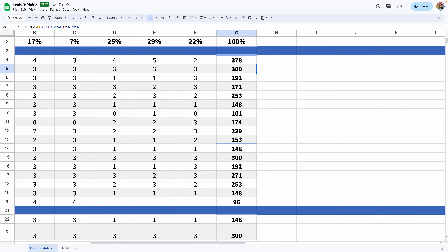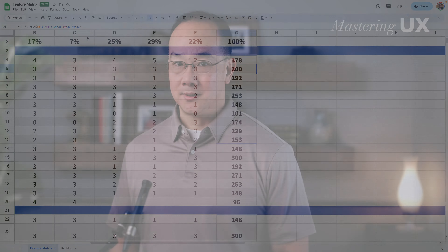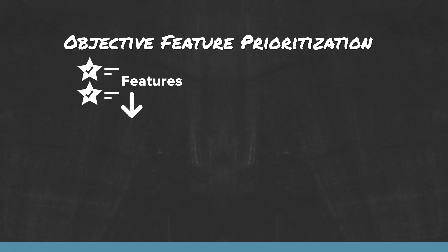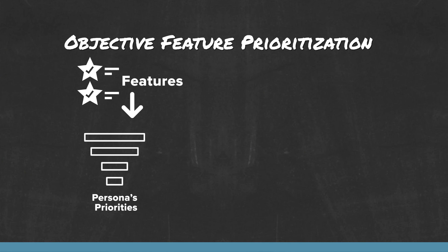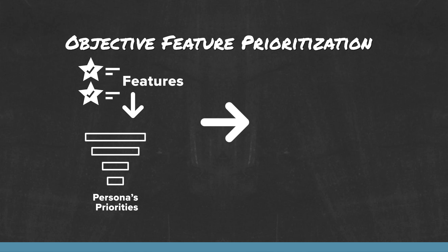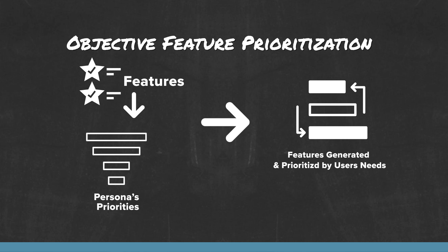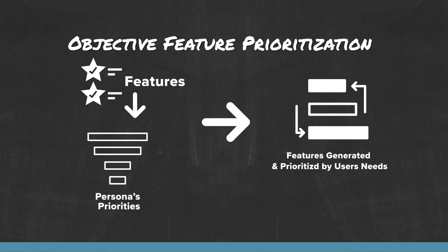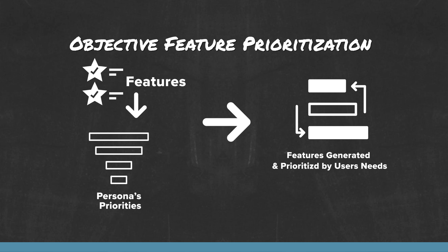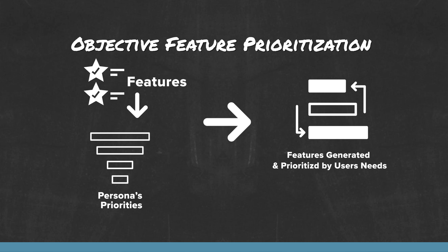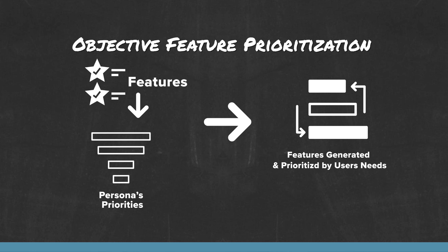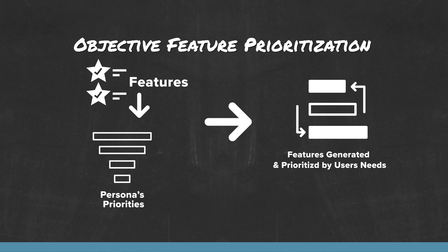So if you have alignment with stakeholders on the persona weights, and you have alignment on how much each persona would value each feature, you now have an objective view on what features matter the most to your personas to inform your design and development decisions.